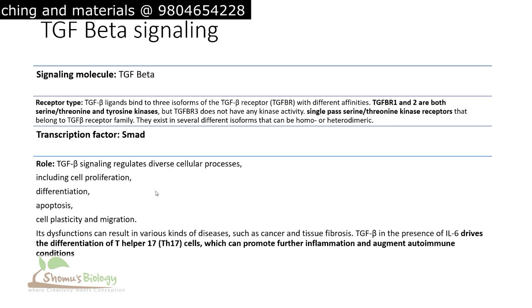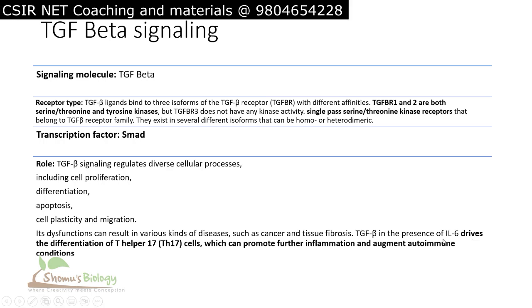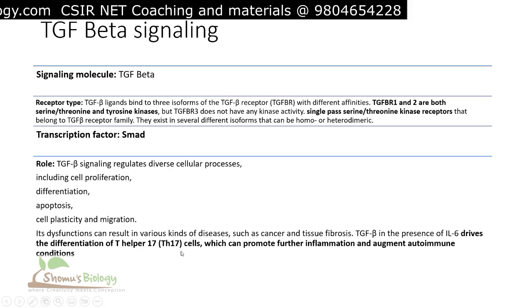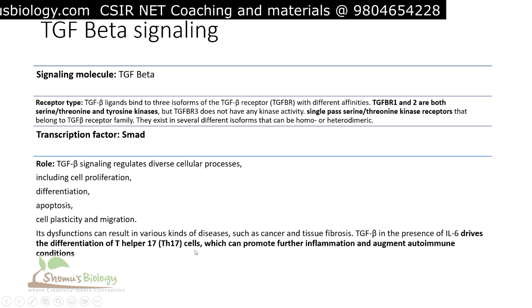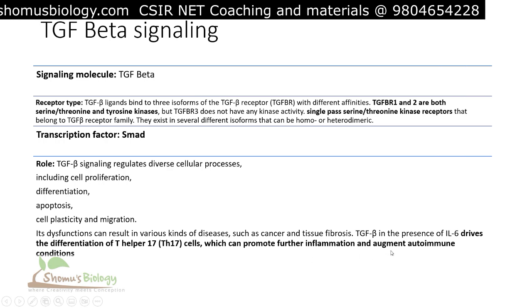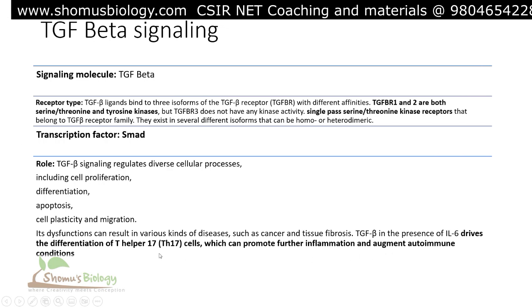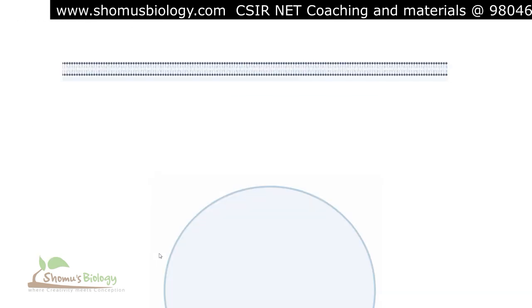TGF-beta in the presence of interleukin-6 drives the differentiation of T helper 17 cells, which can promote further inflammation and augment autoimmune conditions in a person's body.